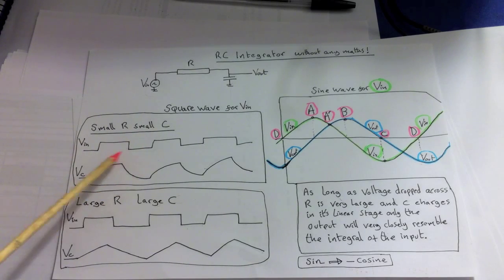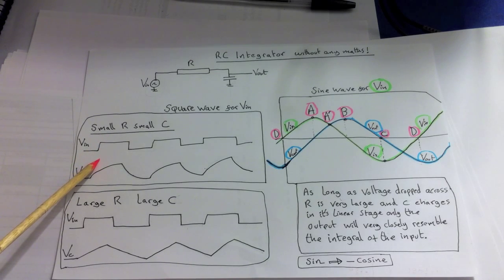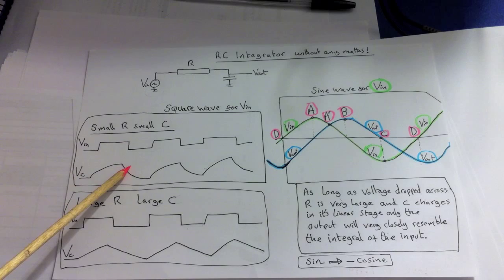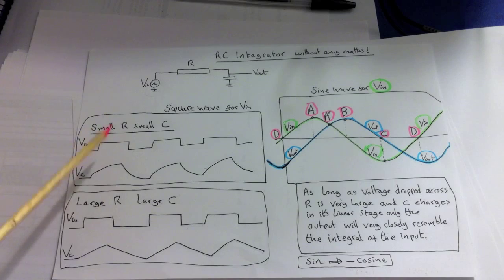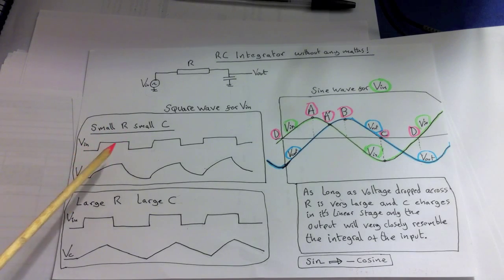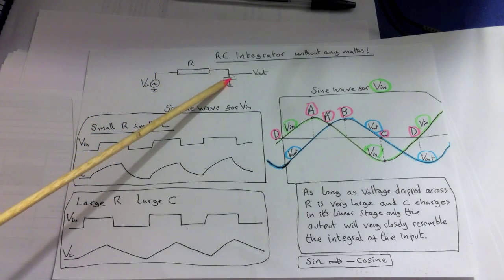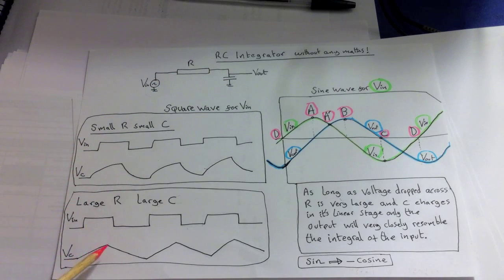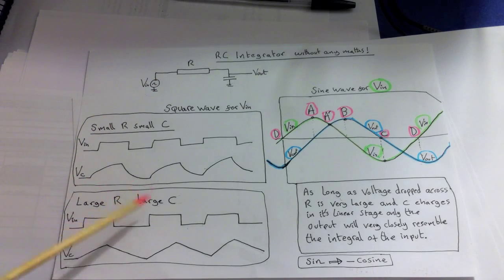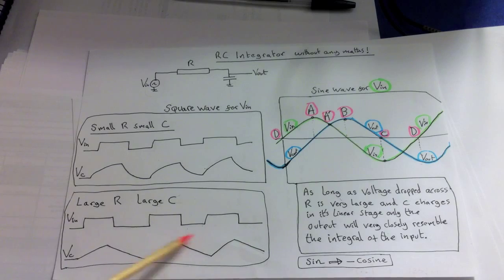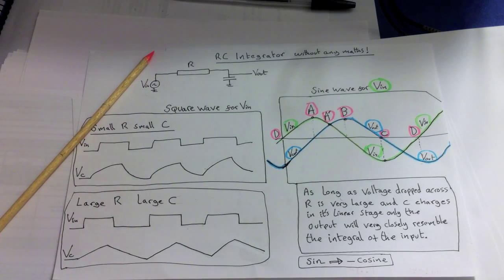Here we've got a small resistor and a small capacitor. With a small capacitor it's going to charge up quite quickly, so we get something that almost looks like a square wave. If we reduce the resistor a lot more, most of the voltage will drop across the resistor and less across the capacitor. If we also increase the size of the capacitor, it takes a lot longer to charge up, so this curve becomes steeper. With a large capacitor and large resistance you end up getting this distinctive shape.